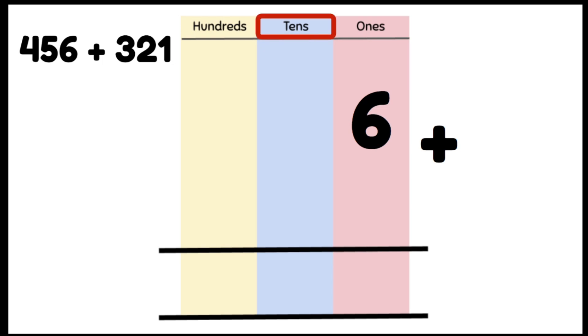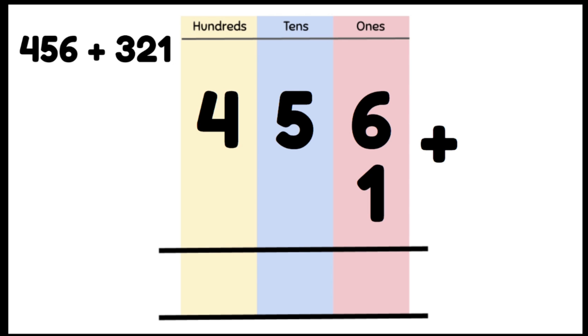456 plus 321. We're lining up our numbers on top of each other in the correct columns. We always add our ones column first, 6 plus 1 gives us 7 ones. So we put that in our ones column.